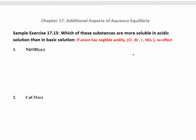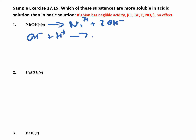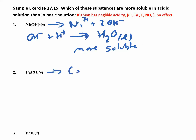Let's try a couple more. For nickel hydroxide, we write: Ni(OH)₂ → Ni²+ + 2OH⁻. Whenever you see OH⁻, note that OH⁻ + H+ makes water. Water is stable and acts like a weak acid product that stays around, so nickel hydroxide is more soluble under acidic conditions.